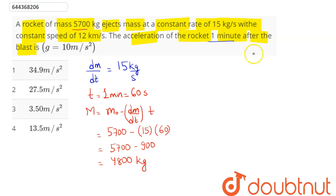So in the rocket, after 1 minute the mass of rocket is 4800 kg which is capital M. So m equal to 4800 kg.